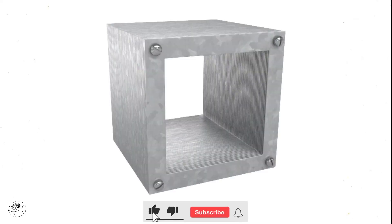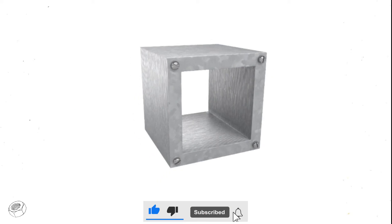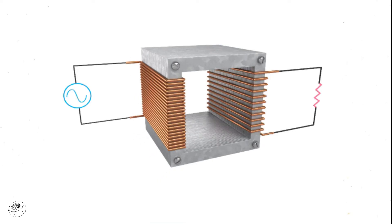Transformers are composed of an iron core ring wrapped in coils. One coil is connected to an AC input voltage and is called the primary coil. The other coil is connected to an output circuit with a load resistance and is called the secondary coil.